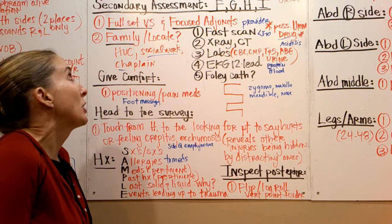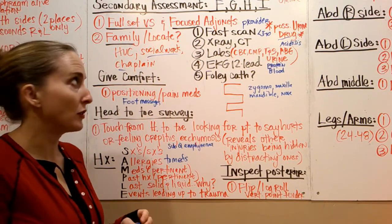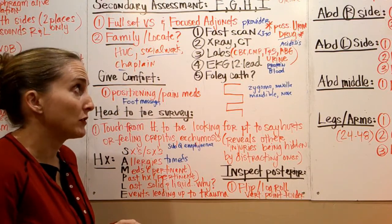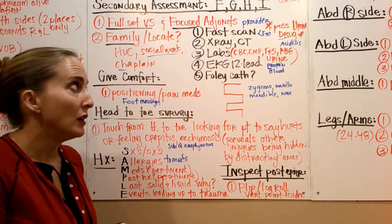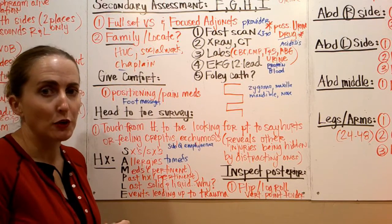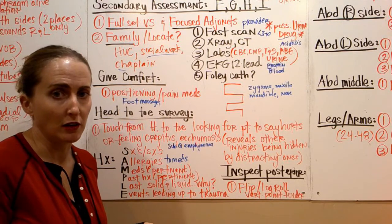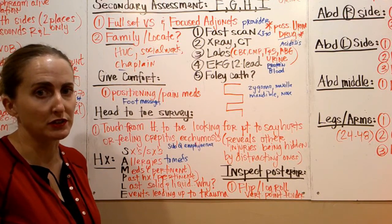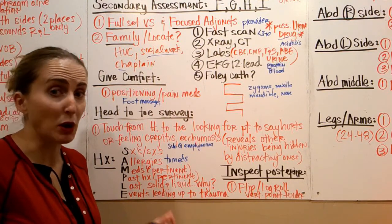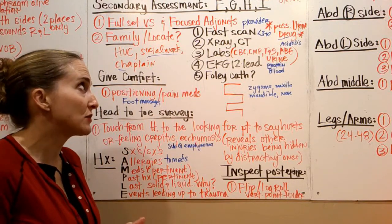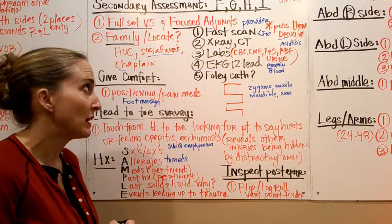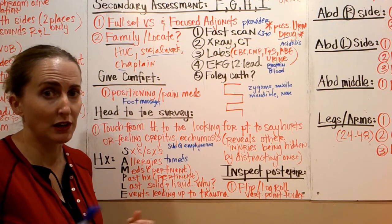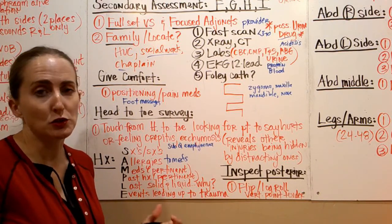Secondary assessment: get a full set of vitals and make sure focused adjuncts are taken care of. The provider will do a FAST scan at the bedside — this is a bedside ultrasound, not the neuro FAST acronym. It must be finished within five to ten minutes. They're only looking for one thing: blood or fluid in the abdomen. FAST stands for Focused Abdominal Sonogram in Trauma. They'll say it's positive for fluid or negative. That should be done from the time the patient rolls in. Then we want X-rays and CTs — usually these come as part of a trauma package or preset order list.